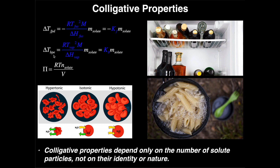If you add solutes to pure water and try to freeze the solution, it won't freeze at zero degrees Celsius — it'll freeze at a lower temperature, maybe negative five or negative ten degrees Celsius. This is a principle people use every day. Alcoholic beverages, for example, are not pure water; they have ethanol and other things dissolved in them. Those solutes create a solution with a lower freezing point, which is why hard liquors and wines can be put in the freezer and won't freeze — their freezing point has been depressed or lowered.